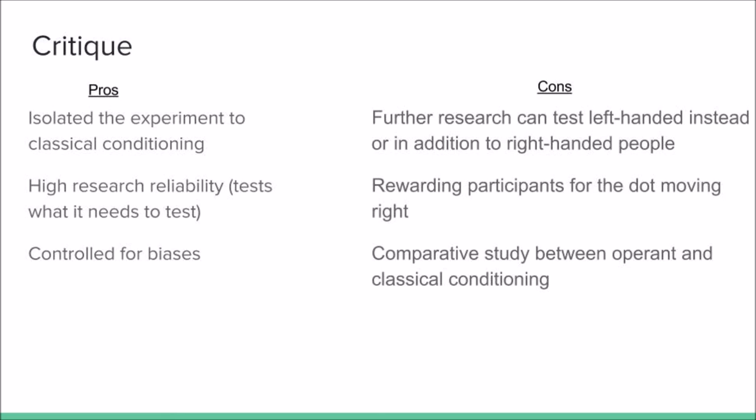One example of such an adjustment would be a test with left-handed individuals. While there isn't exactly evidence to suggest this is necessary, a combined study that includes members of both groups, left-handed and right-handed, in addition to including different reward directions with each group, would create a study that incorporates a wide variety of possibilities.